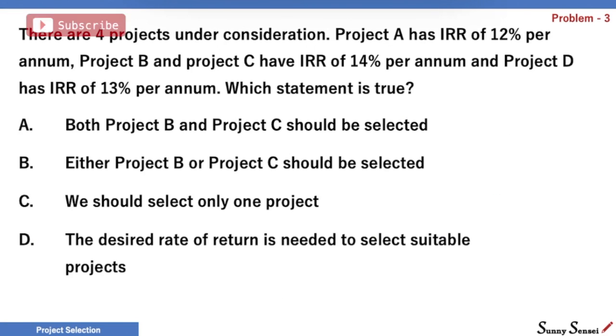We will move to the third problem now. There are 4 projects under consideration. Project A has IRR of 12%. Project B and Project C have IRR of 14%, and Project D has IRR of 13%. Which statement is true? A: Both Project B and Project C should be selected. B: Either Project B or Project C should be selected. C: We should select only one project. D: The desired rate of return is needed to select suitable projects.